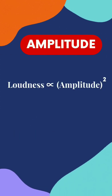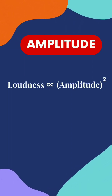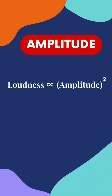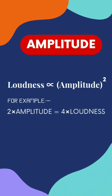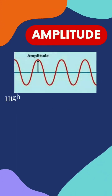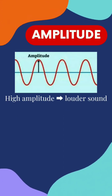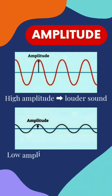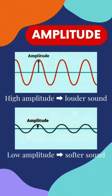The relation of amplitude with loudness is such that loudness is directly proportional to the square of the amplitude. For example, twice the amplitude will give us four times the loudness. Therefore, more amplitude produces louder sound, and lower amplitude produces softer sound.